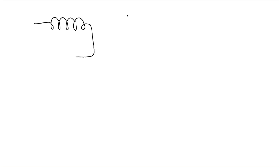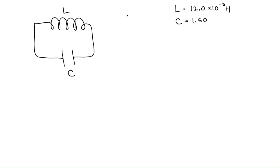Let's begin with a sketch of our LC circuit. We have an inductor attached to a capacitor. The inductor has an inductance L given as 12.0 mH. The capacitor has a capacitance C equal to 1.50 microfarads, and we know the capacitor is initially charged with a potential difference of 57.0 volts.